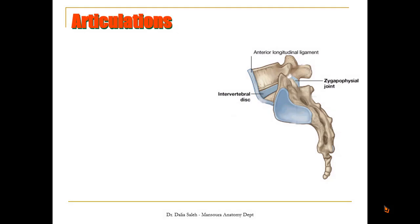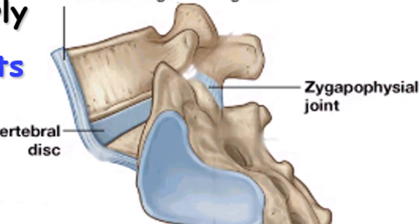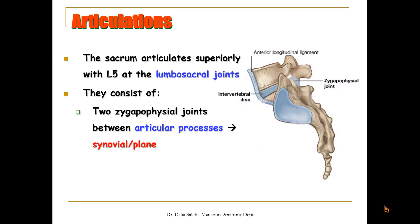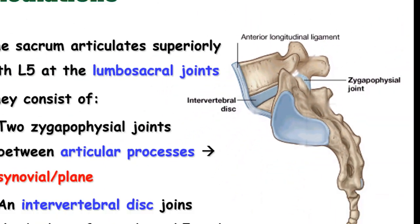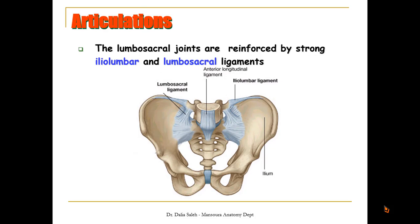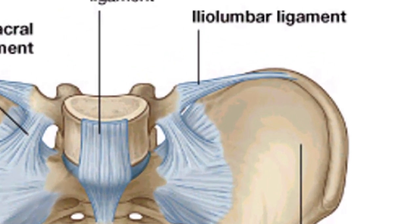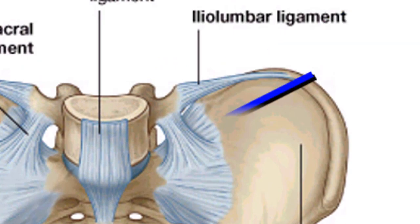For the joints or the articulations holding these bones together: the sacrum articulates superiorly with the last lumbar vertebra at the lumbosacral joints. They consist of two zygapophysial joints between the articular processes of the last lumbar and the first sacral piece — these are synovial plane joints — and a median intervertebral disc joins the lower surface of the body of the last lumbar vertebra with the upper surface of the first sacral vertebra, which is a secondary cartilaginous joint. The lumbosacral joints are reinforced by strong iliolumbar and lumbosacral ligaments.